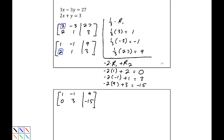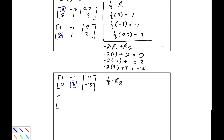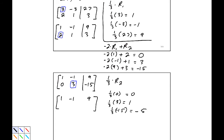Next, I want a 1 in the second row, second column entry, which is currently 3. So I'm going to multiply row 2 by one-third. The first row is unchanged: 1, negative 1, 9. For the second row: one-third times 0 is 0, one-third times 3 is 1, and one-third times negative 15 is negative 5. So the second row becomes 0, 1, negative 5.